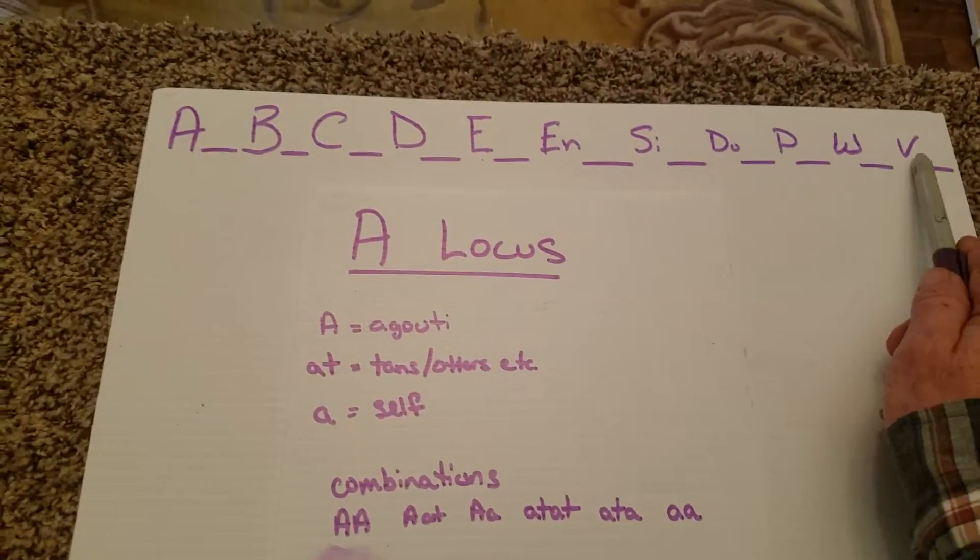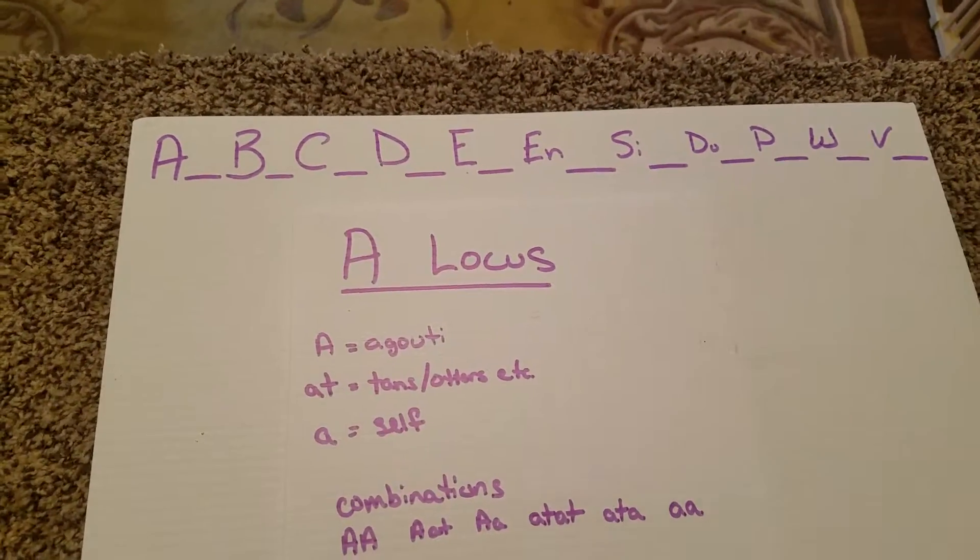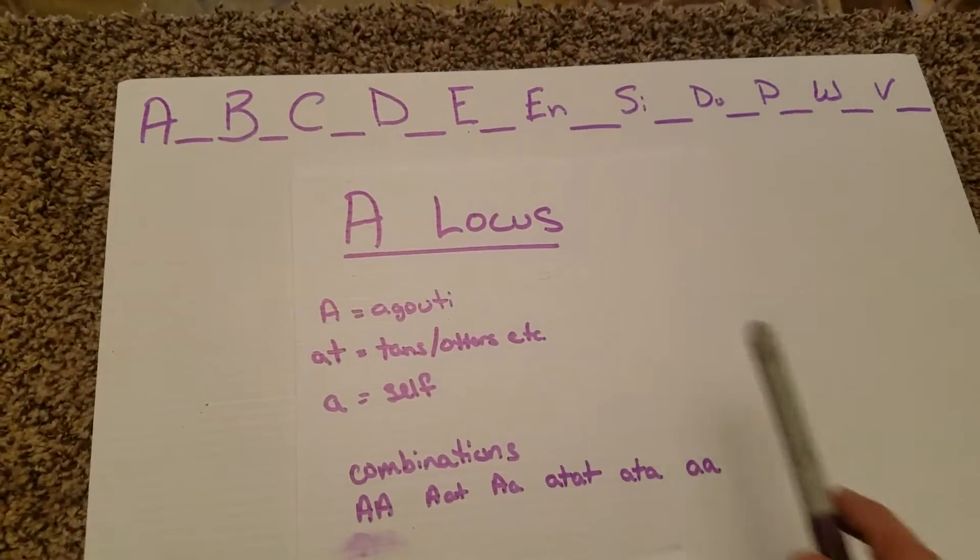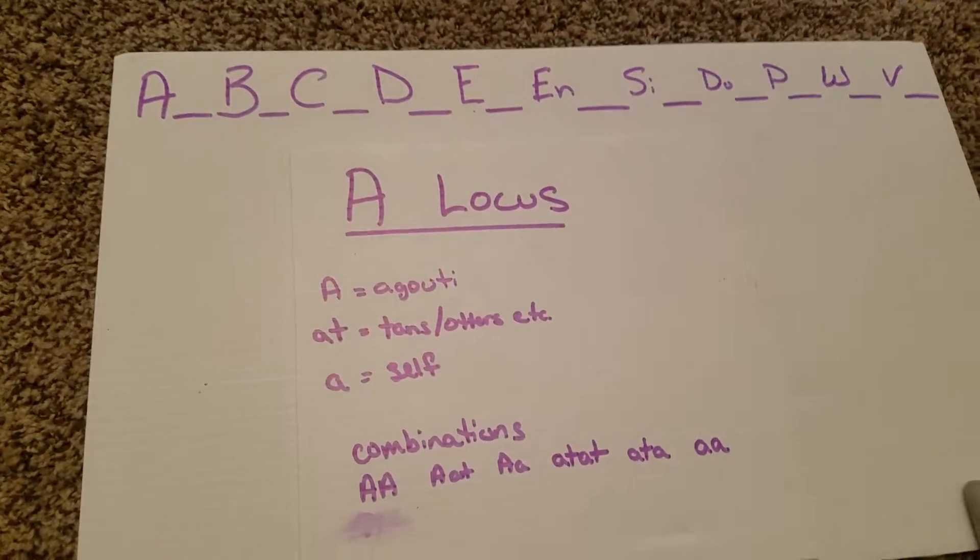We've talked a little bit briefly now that the genetic string is what it is. We're going to talk about the A locus first.